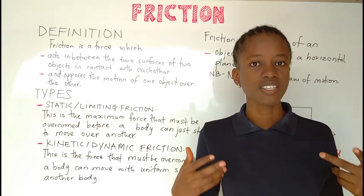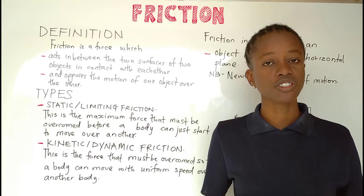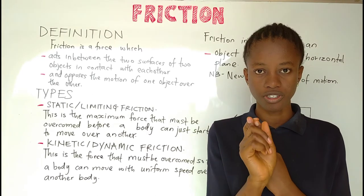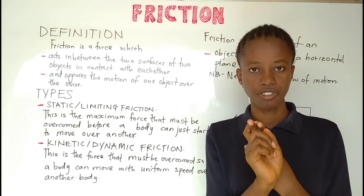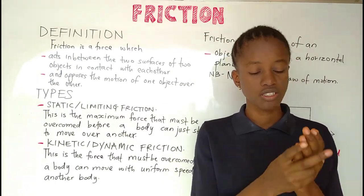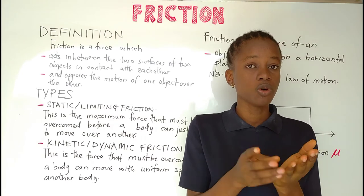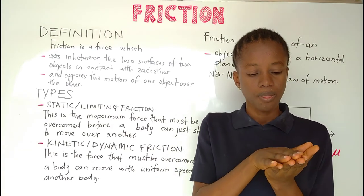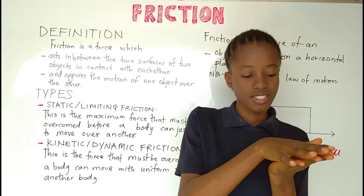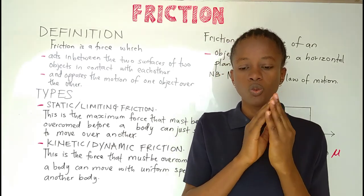The first thing that comes to mind is: what is friction? Friction is a force. There are two other things we need to know about friction — where friction acts and what friction does. Let's say we have two objects with their surfaces in contact with each other. Friction is going to act in between the two surfaces of the two objects in contact with each other.